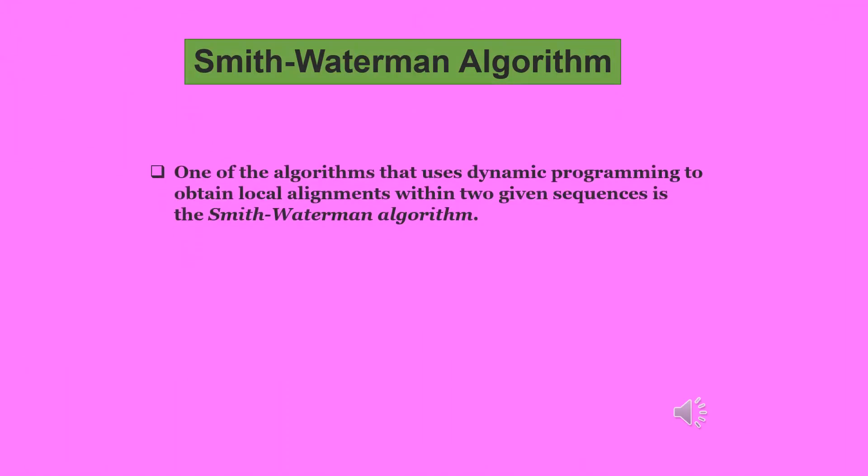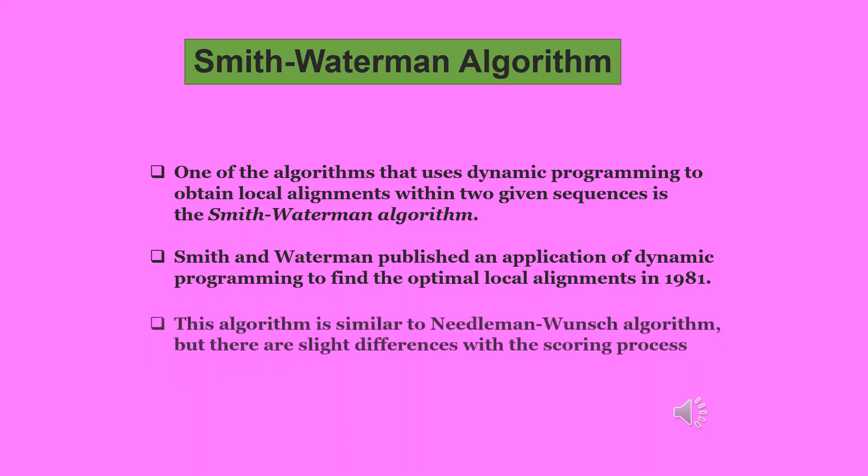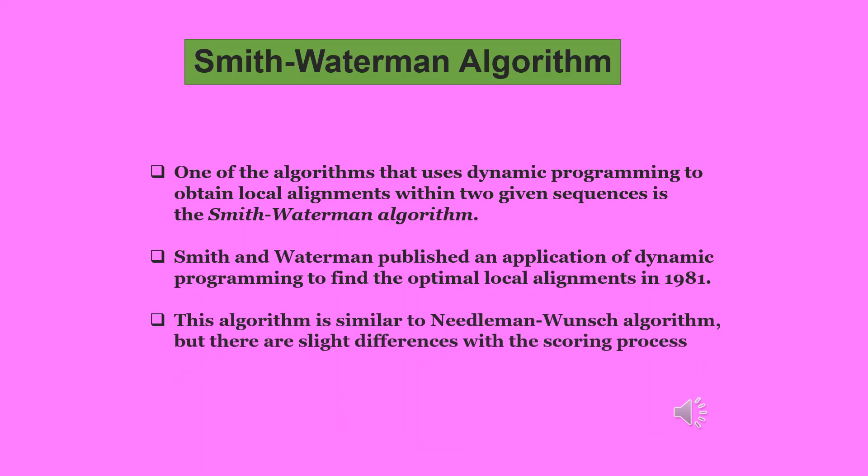Let us examine Smith-Waterman algorithm. One of the algorithms that uses dynamic programming to obtain local alignments within two given sequences is the Smith-Waterman algorithm. Smith-Waterman published an application of dynamic programming to find the optimal local alignments in 1981. This algorithm is similar to Needleman-Wunsch algorithm but there are slight differences with the scoring process.